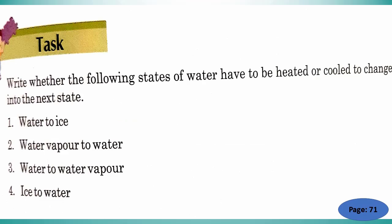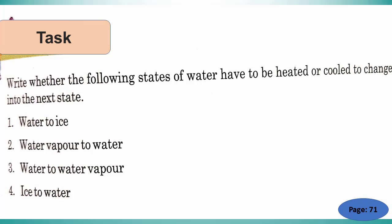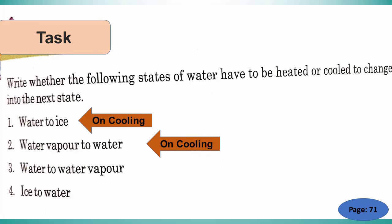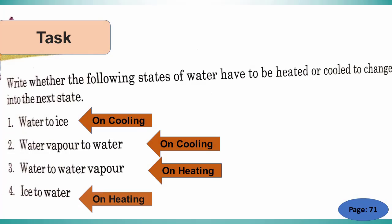Move on to the next page, page number 71. We will do a task on this page. The task is: write whether the following states of water have to be heated or cooled to change into the next stage. Number one — water to ice: water changes to ice on cooling. Number two — water vapor to water: water vapor changes to water on cooling. Number three — water to water vapor: water changes to water vapor on heating. And ice changes to water on heating. I hope these points are clear.